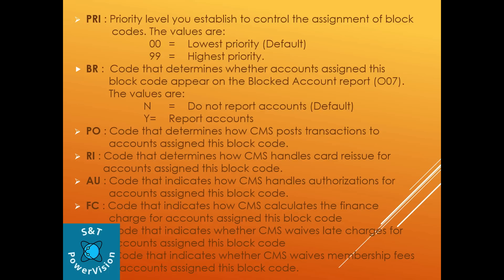We will not cover all values in detail — if you want to see the values for all these fields, refer to the CMS manual. PO indicates the code that determines how CMS posts transactions to the account assigned this block code. RI stands for the code that determines how CMS handles card reissue for account assigned this block code. AU is the code that indicates how CMS handles authorization for the account assigned this block code. FC is the code that indicates how CMS calculates the finance charge for the account assigned this block code.